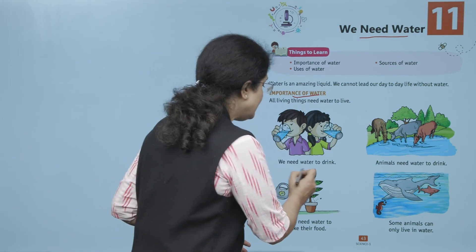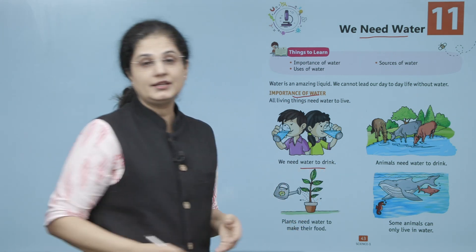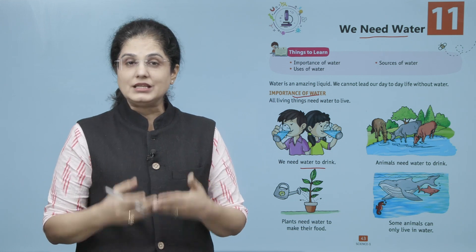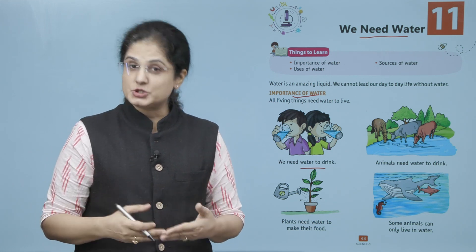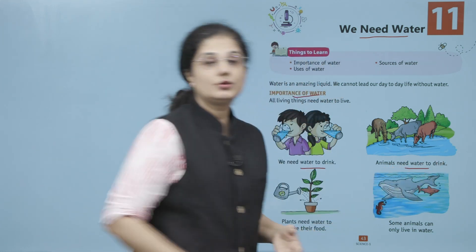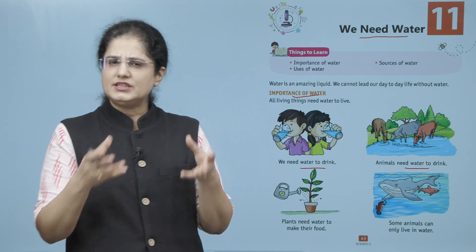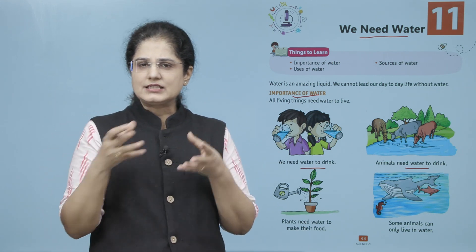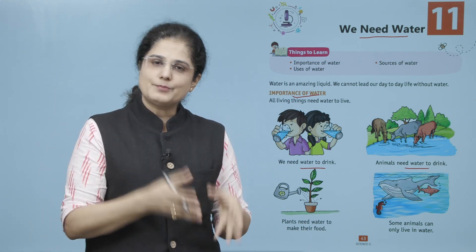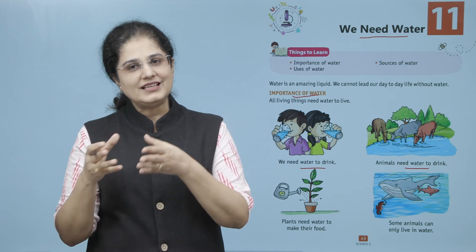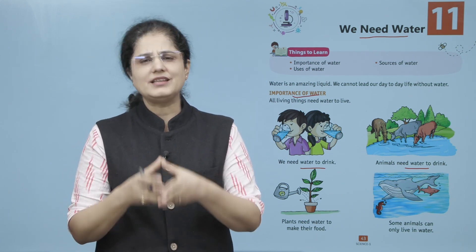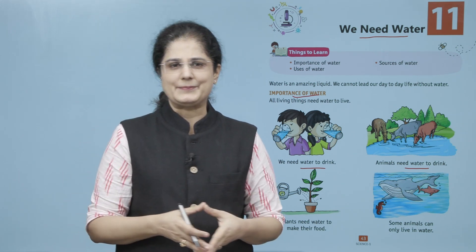We need water to drink. Hum insano ko peene ke liye paani chahiye. Animals need water to drink. Jitni alag-alag type ke janwar hai, sab ko jine ke liye paani ki zarurat pardhi hai. Sab ko paani peena hota hai.